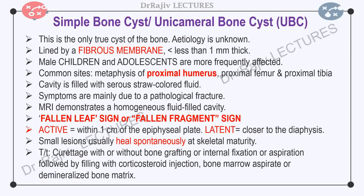UBC usually occurs in the metaphyseal areas close to the physis but does not cross the physis. Proximal humerus is the commonest site. Its etiology is unknown. UBC is a membrane-lined cavity within a bone filled with serous or serosanguineous straw-colored fluid. The cortex may thin out and may lead to a fracture. Symptoms are mainly due to a pathological fracture sustained after trivial trauma.